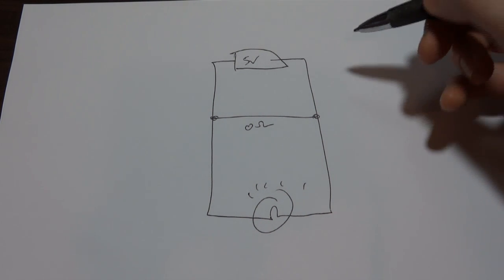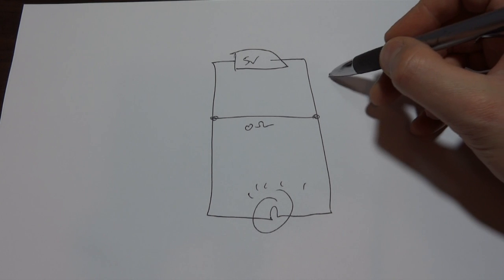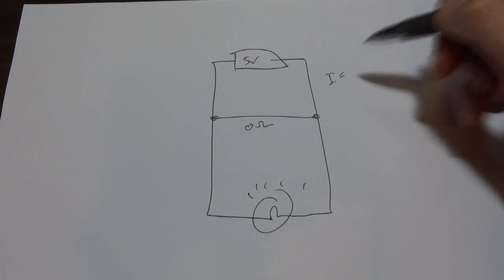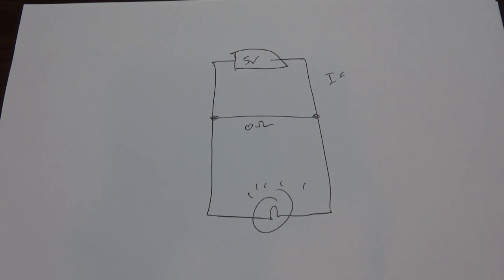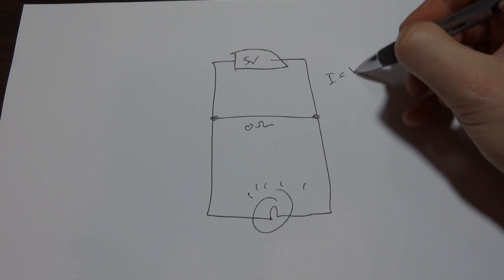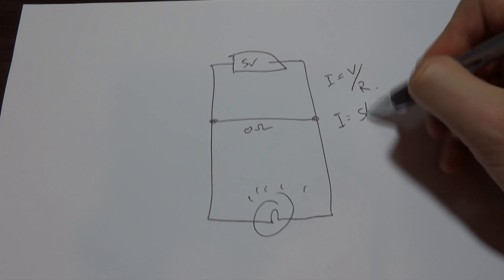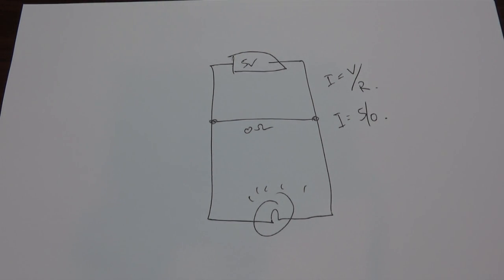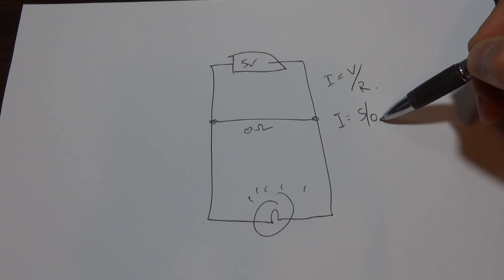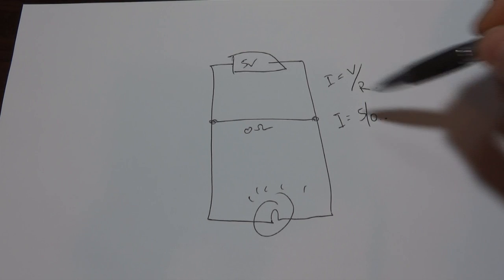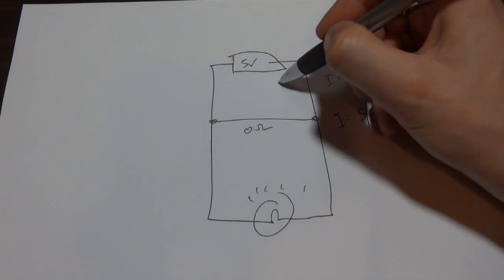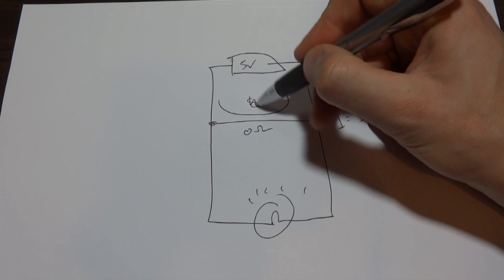So basically, we'd have a divide by zero error, which means that current, via Ohm's law, is basically voltage divided by resistance. So in this case, our current would be five divided by zero. And if you try that on a calculator, you'll get an error or the answer's infinity. And that's because no matter how many zeros you add together, you can never get to five. So in theory, we would be drawing an infinite current.